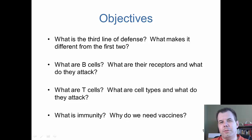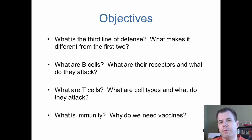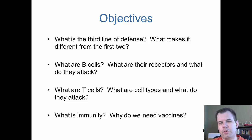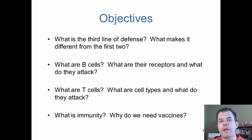Hi class, Dr. Jim here. Chapter 15 — we're now looking at acquired or adaptive immunity. It really has these two names because you acquire this immunity over your lifetime and it adapts to what you're exposed to. That's where we get those two names.